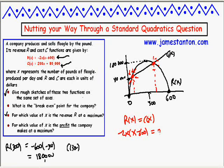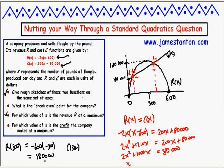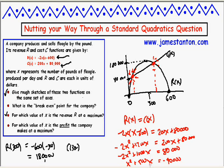We need to solve -2x(x - 600) = 200x + 80,000. Expanding: -2x² + 1200x = 200x + 80,000. Subtract 200x from both sides: -2x² + 1000x = 80,000. Divide everything by -2: x² - 500x = -40,000.